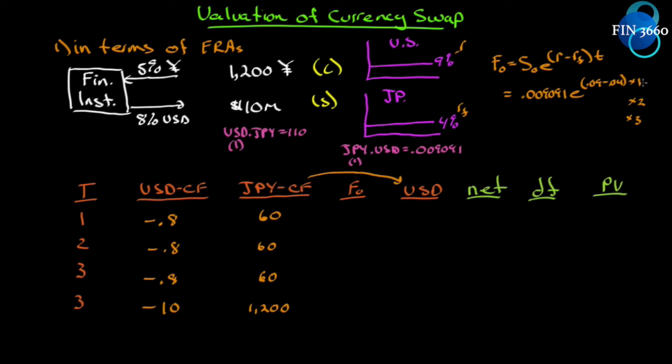We were told our term structure of LIBOR is flat in the US at 9%. This is R. And it's flat in Japan at 4%, and since the domestic currency is US, this must be the foreign return. To get our forward rate, it would equal our spot, 0.009091, E to the power of 0.09 minus 0.04 times 1, second year times 2, third year times 3. The S-naught stays the same. E to the R minus RF stays the same. It's just T. We need a forward rate after year 1, after year 2, after year 3. Once we solve for this formula with the power of 1, 2, and 3, we'll get forward rates of 0.009557, 0.010047, and 0.010562.